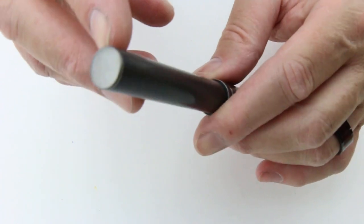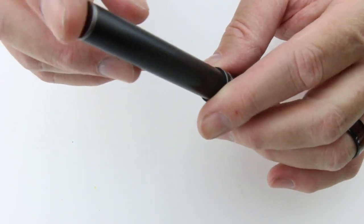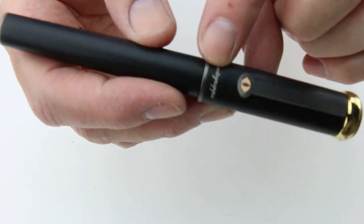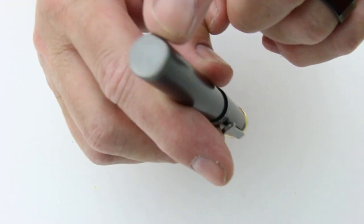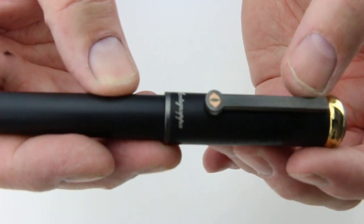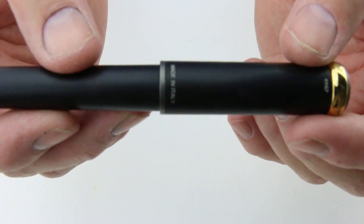It has black, gray, dark gray ruthenium finishes on the clip, ring, and bottom of the barrel. It's engraved with Monte Grappa, the logo, and made in Italy on the back.